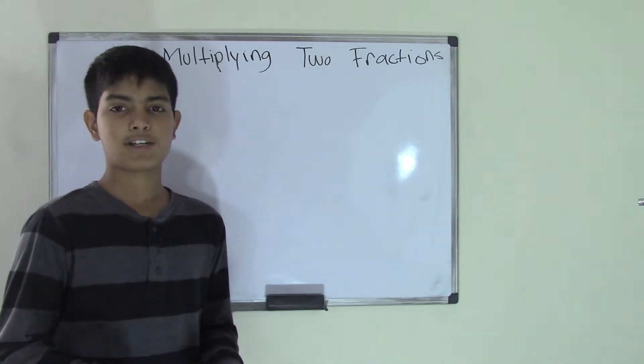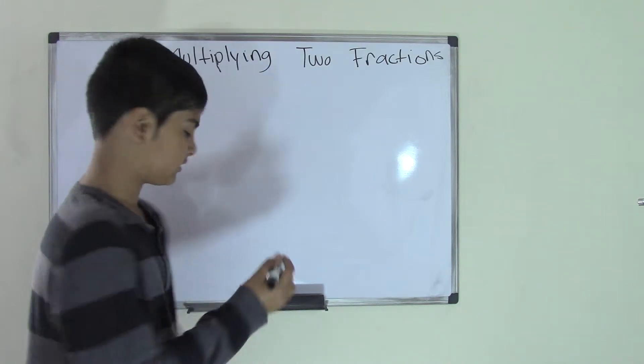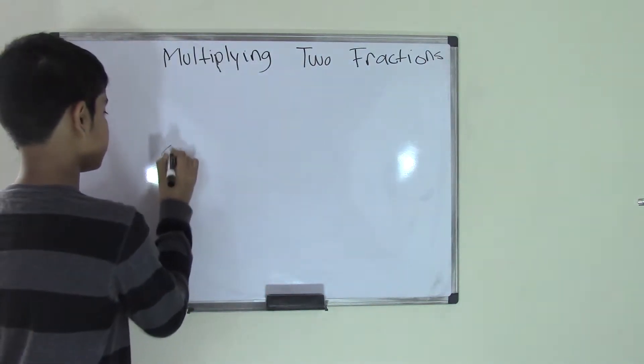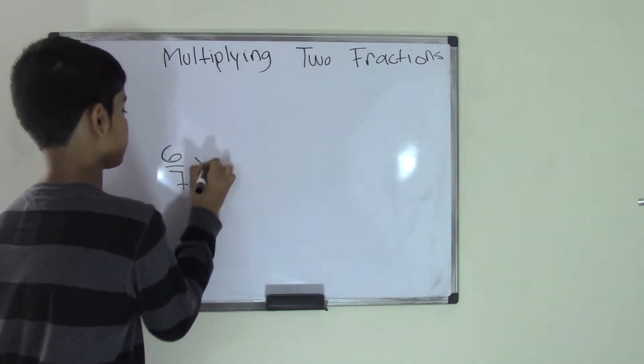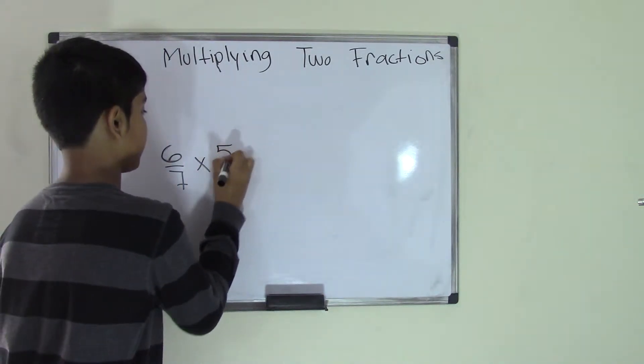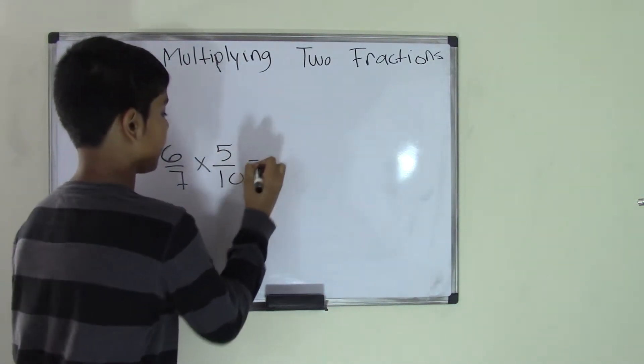How do you multiply two fractions? Well, this is how. For example, you have the two fractions 6 over 7, and you have to multiply that by 5 over 10. How do you do this?